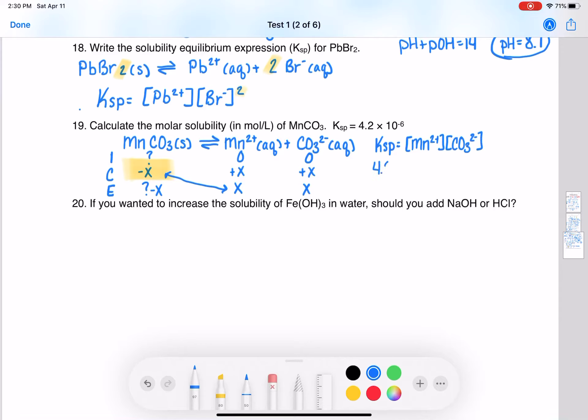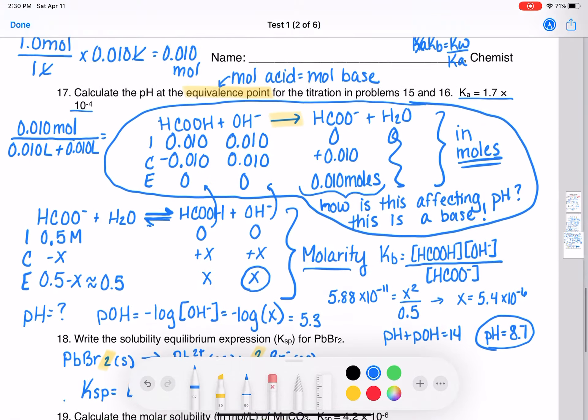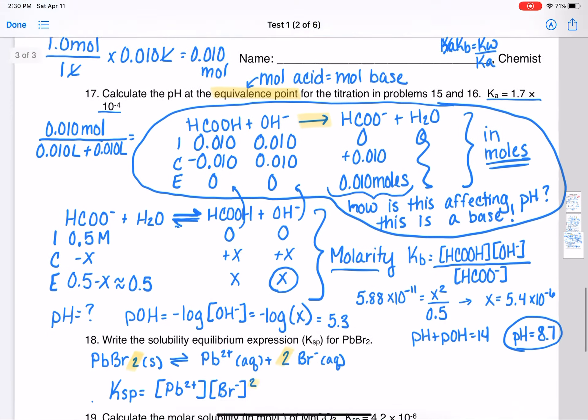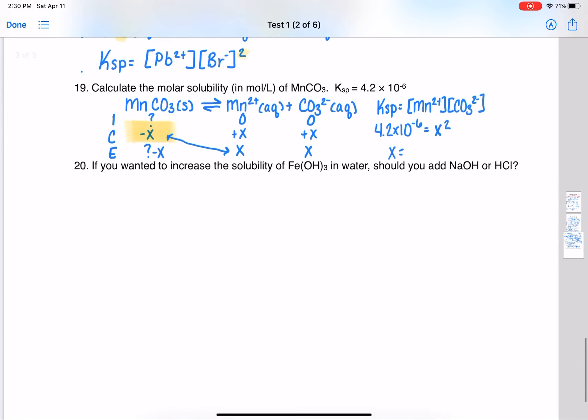Ksp is 4.2 times 10 to the minus 6, and that is equal to X squared. X is the square root of 4.2 times 10 to the minus 6, which equals 2.05 times 10 to the minus 3.